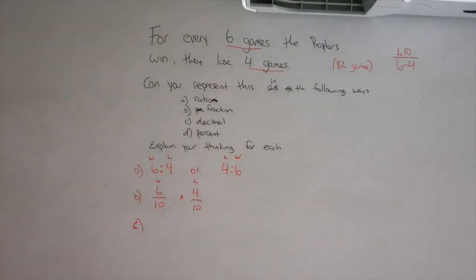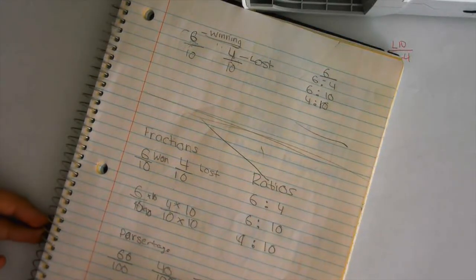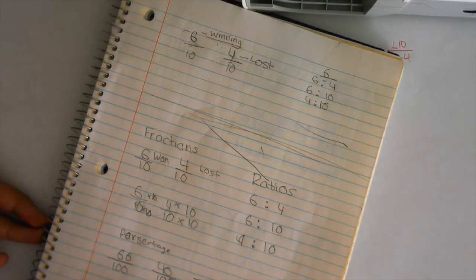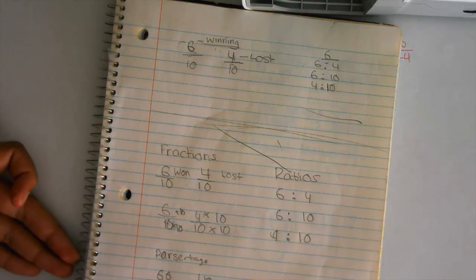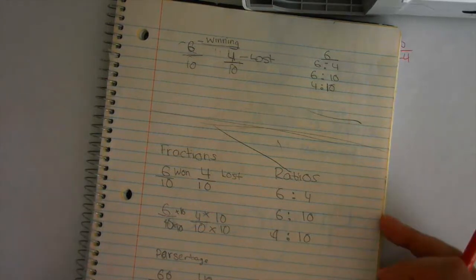Is there another way that someone represented how to find a decimal? Come on up. There's a couple ways to do this. Basically, after I found the percentage, I just said zero point sixty, zero point forty. Okay, so you changed your denominator out of a hundred because percent is out of a hundred.